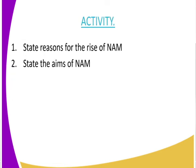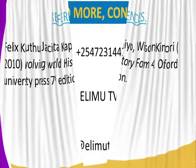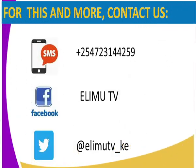For our activity, state the reasons for the rise of NAM and also state the aims of the non-aligned movement. As always, refer to Evolving World: History and Government. For more videos and lessons, get in touch with us via ELIMU TV — contact 07231-44259. Send us your feedback so we know how our lessons are progressing. Also, if you want more videos, go to ELIMU TV on YouTube and always remember to subscribe.